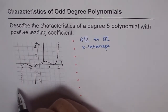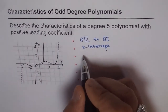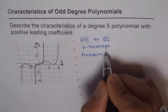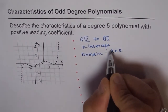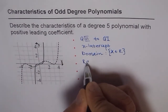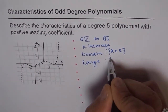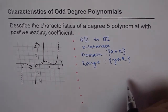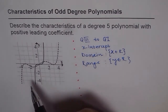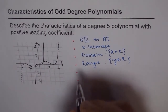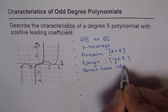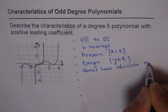As the graph moves from negative infinity to positive infinity, the domain is all real numbers, and this is true for all polynomials. The range is also all real numbers for all odd degree polynomials. In even degree polynomials, we may have an absolute maximum or minimum value, but here we can only have local maximum and minimum — we cannot have an absolute maximum or minimum value.